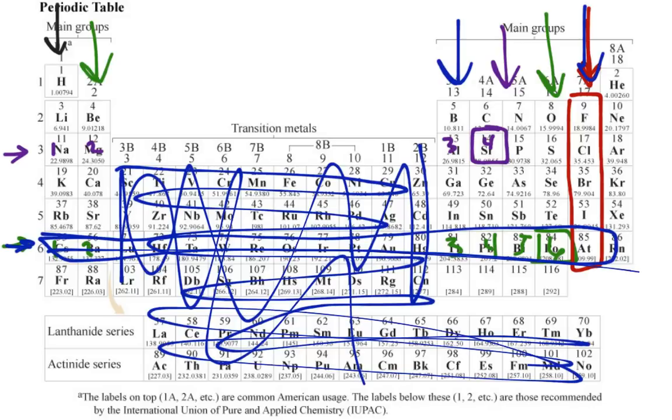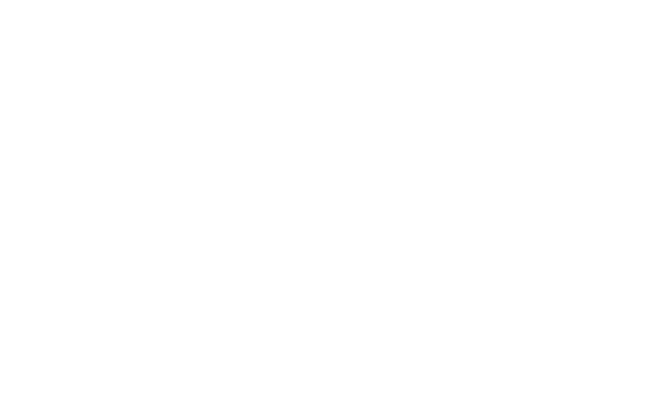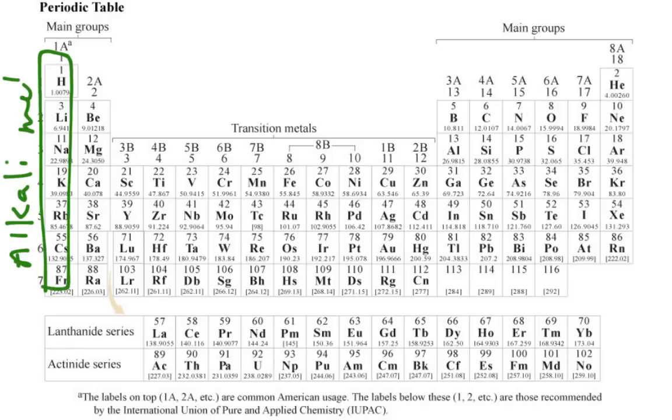All right, so that gives us, so we even named some of these. There are four names that we need to know. This first one is the alkali metals. The second one is the alkali earth metals.